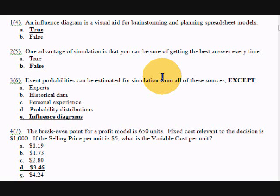Question number two, again that's five on the other test forms, is one advantage of simulation is that you can be sure of getting the best answer every time. That is false. That is actually the objective of an optimization model, not a simulation.